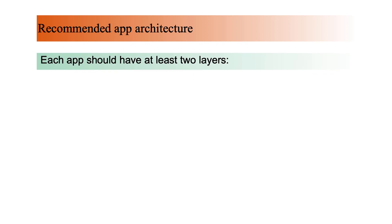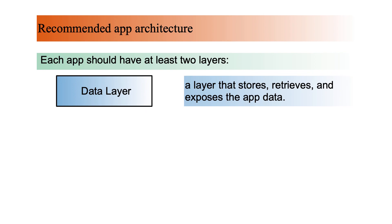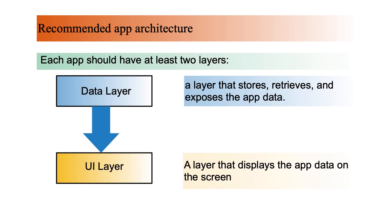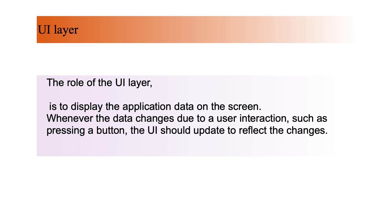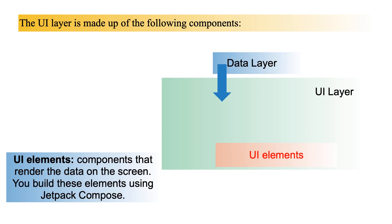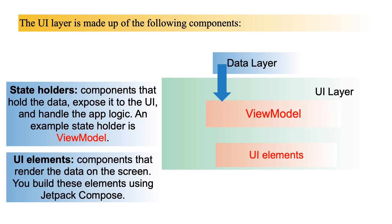The recommended app architecture states that each app should have at least two layers: a data layer — a layer that stores, retrieves, and exposes the app data — and a UI layer — a layer that displays the app data on the screen. The role of the UI layer is to display the application data on the screen whenever the data changes due to user interactions such as pressing a button; the UI should update to reflect those changes. The UI layer is made up of UI element components that render the data on the screen, which you build using Jetpack Compose functions.